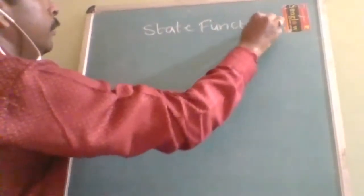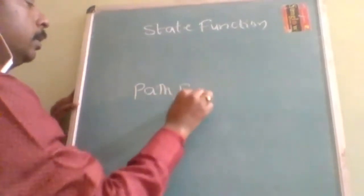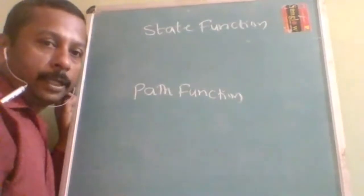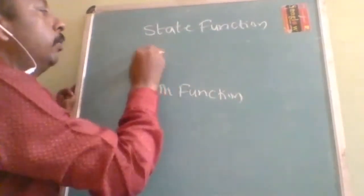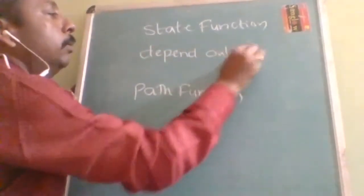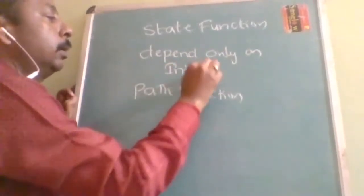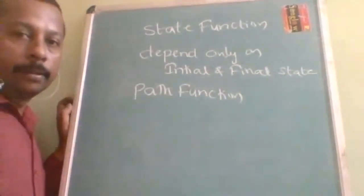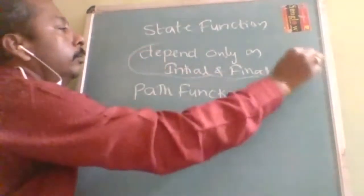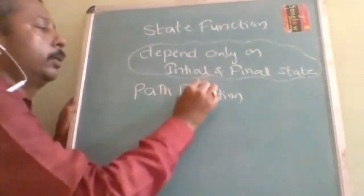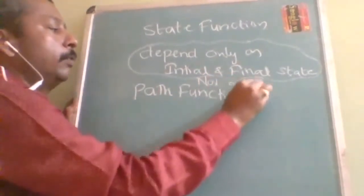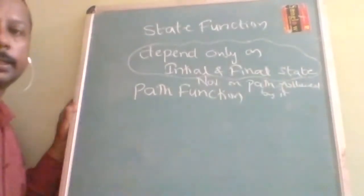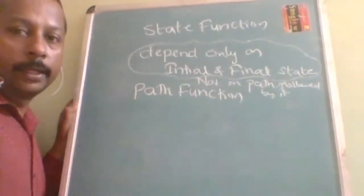Now coming to state function and path function. There are two types of functions. A state function depends only on the initial and final state, but not on the path followed to reach that state. From the given initial state to the final state, how we reached it does not affect the state function.